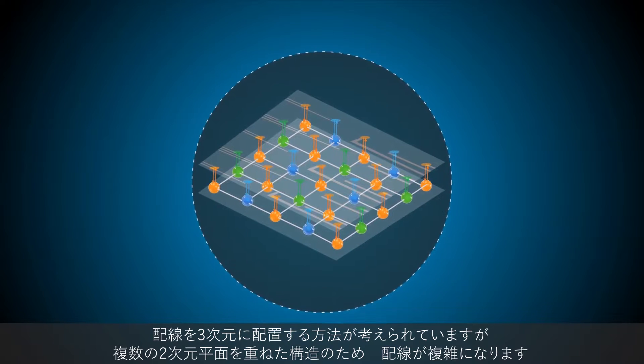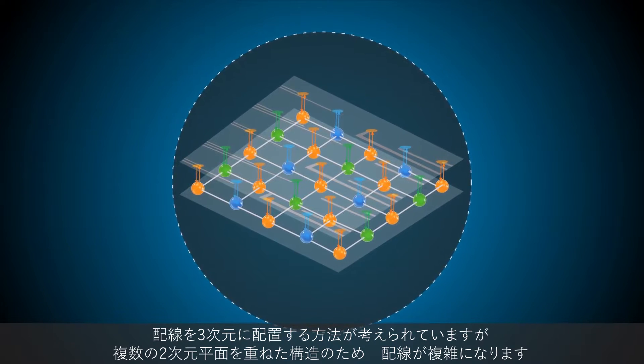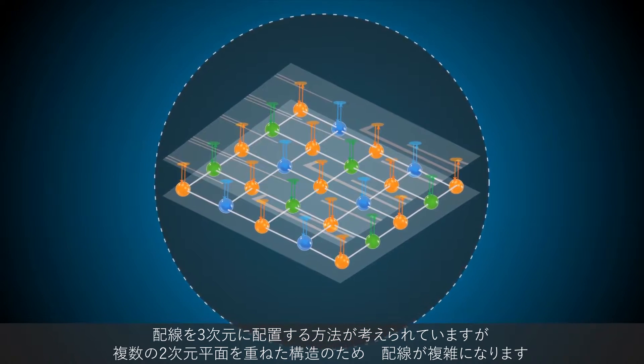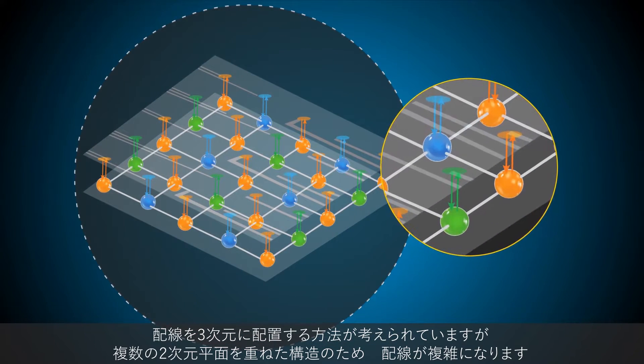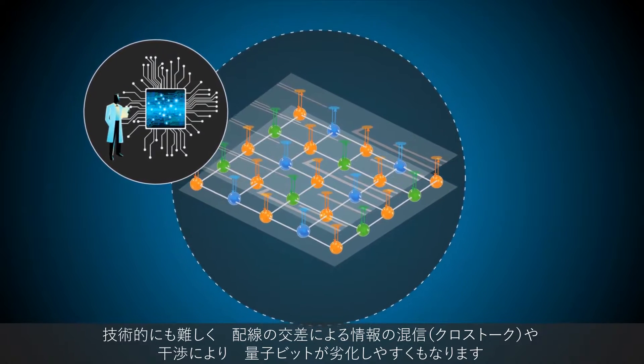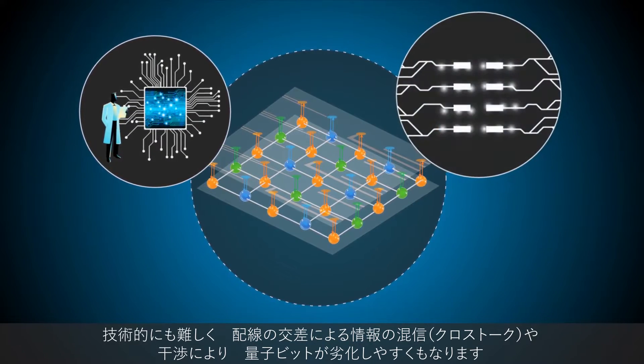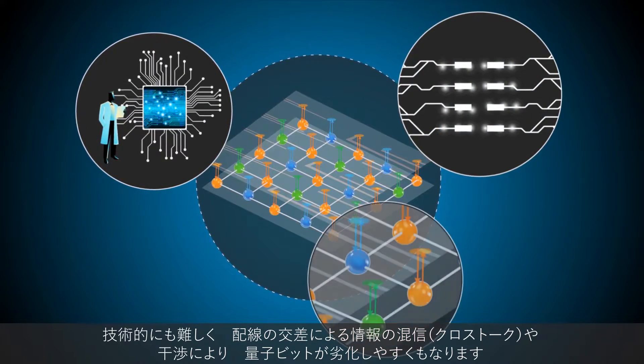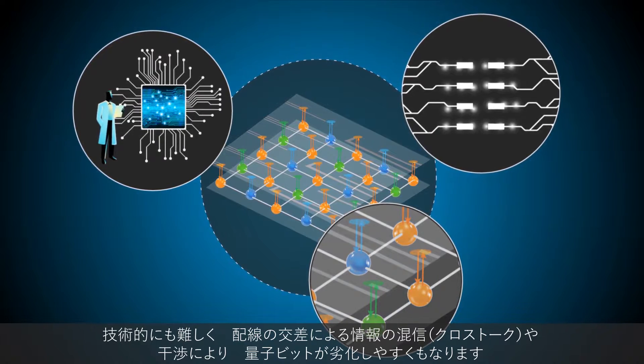To make this possible, complex and intricate 3D wiring systems have been devised, creating structures that span multiple planes. These structures are difficult to construct, involve considerable crosstalk and interference, and result in the rapid degradation of qubits.